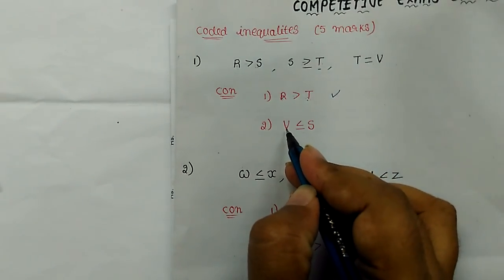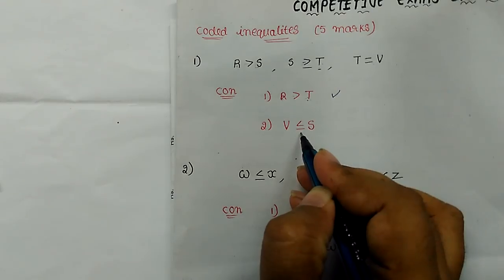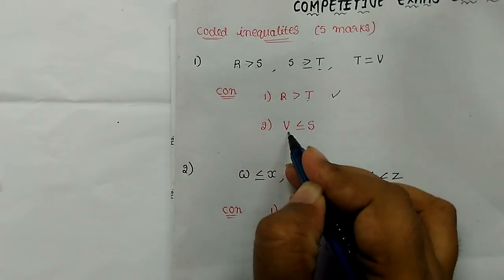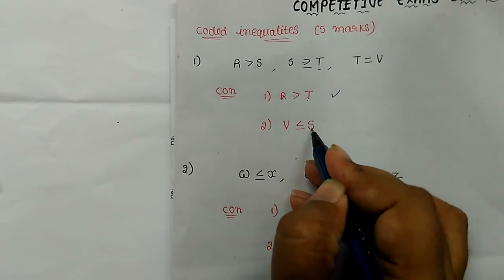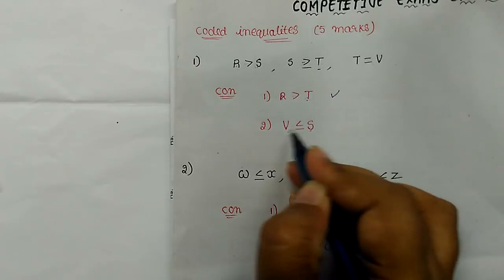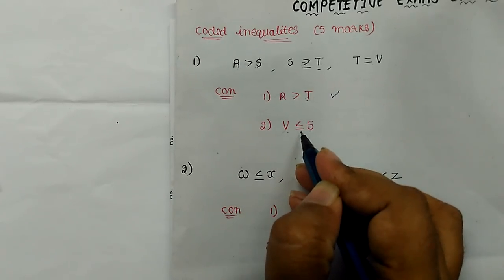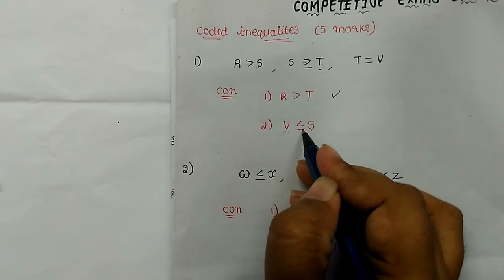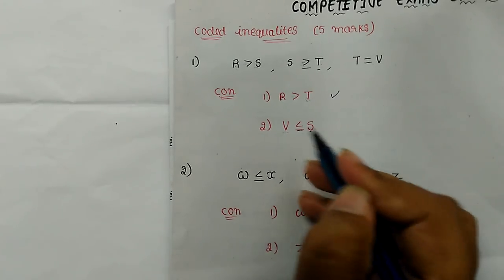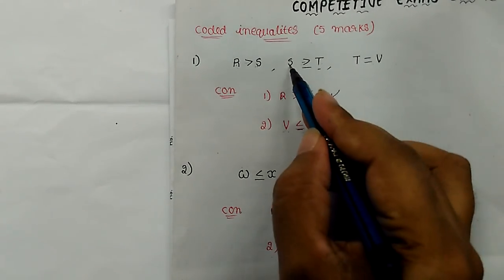V less than or equal to S — but we don't know if S and V are related. So S and V: this is equal to two elements. S and V is well, equal to one time travel.